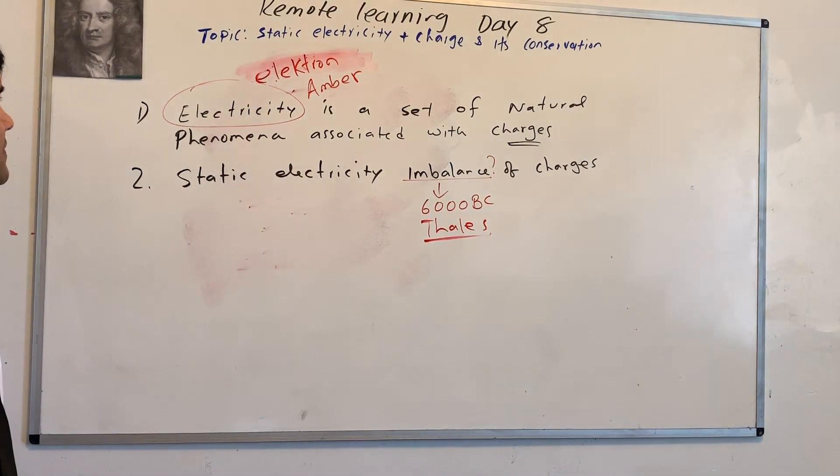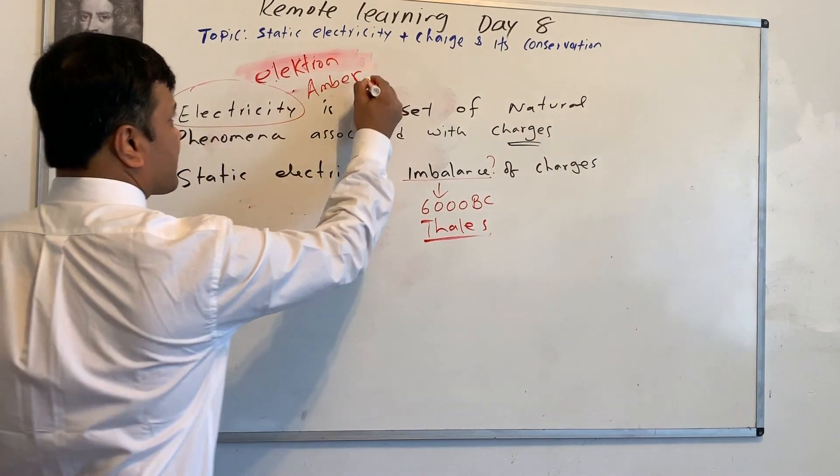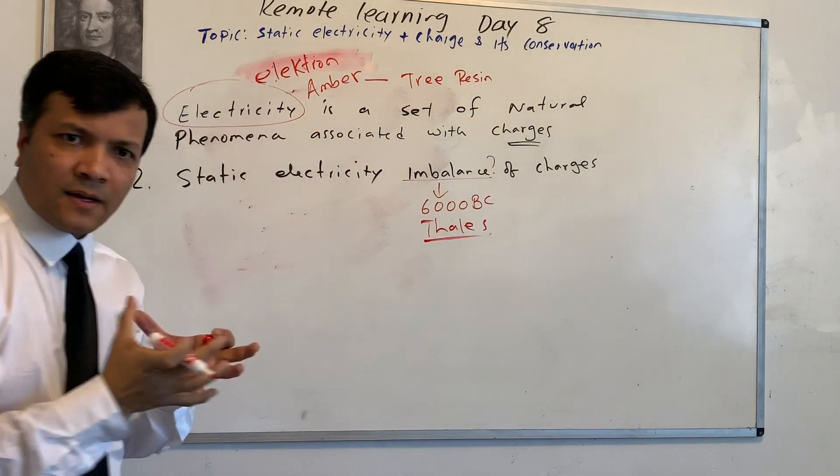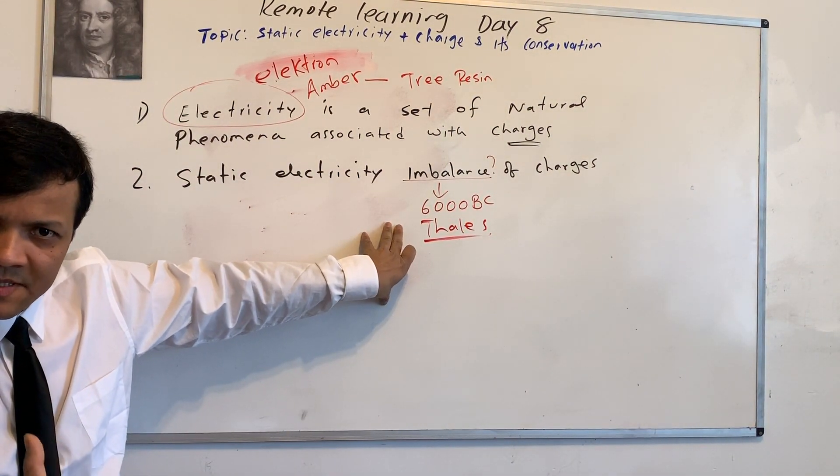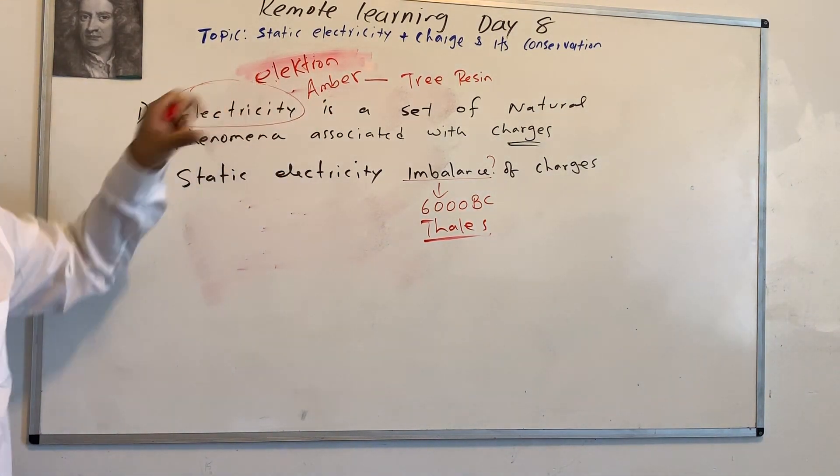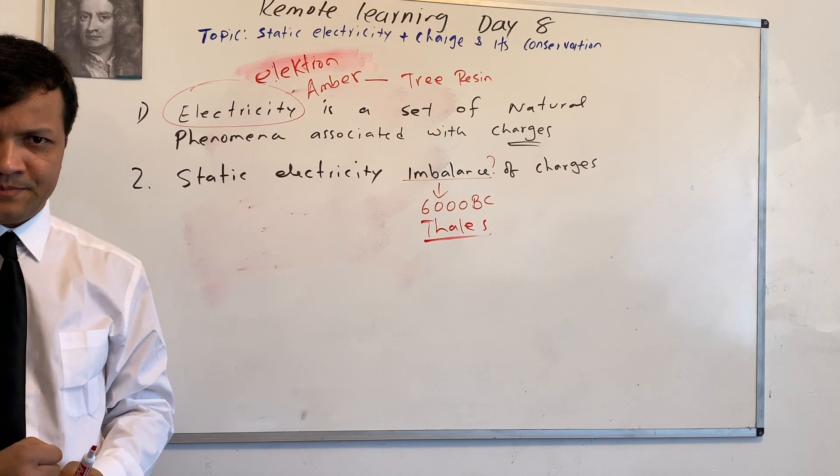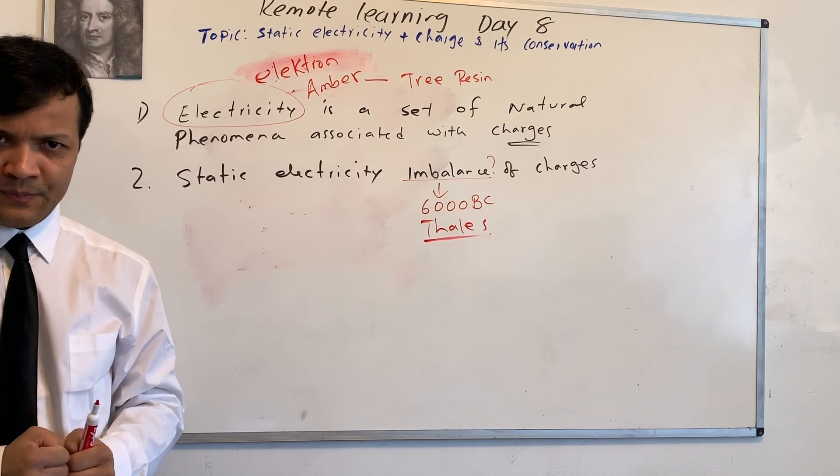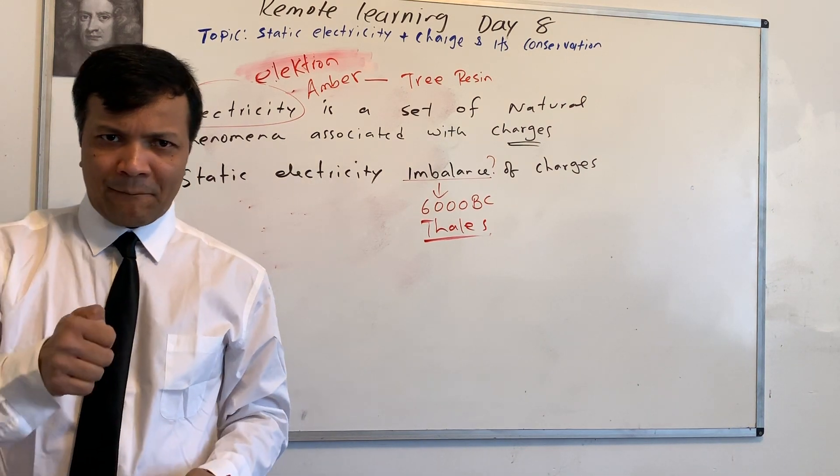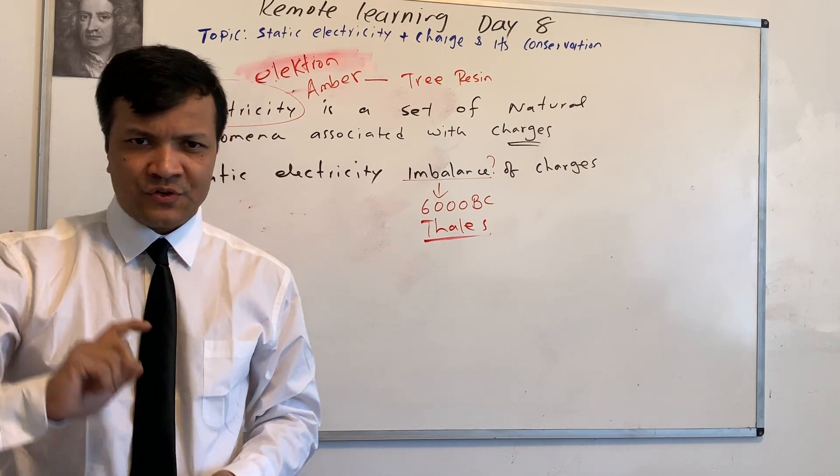So what is amber? Amber is a tree resin. People at this time 6000 B.C., long time ago, used to get the amber from the tree. And they used to rub the amber with the cloth, making the amber negatively charged, bringing it close to the tree leaves. And amber would be able to pick up the tree leaves.